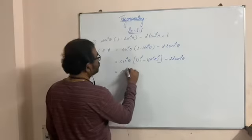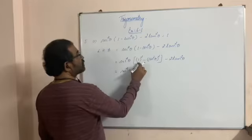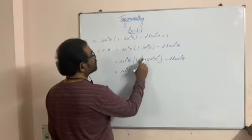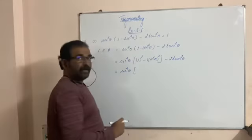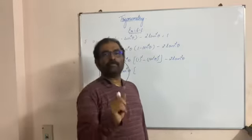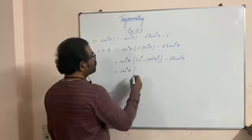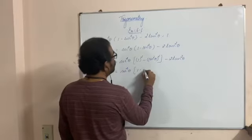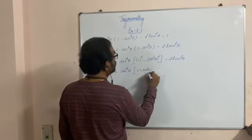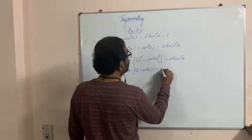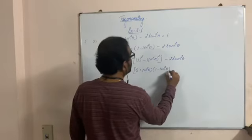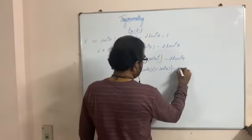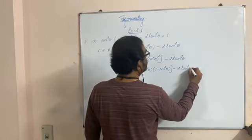This is sec⁴θ into a² minus b², where a is 1 and b is sin²θ. Now a² minus b² equals (a + b)(a - b), so this becomes (1 + sin²θ) into (1 minus sin²θ).